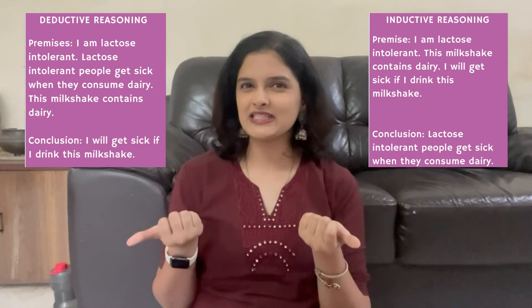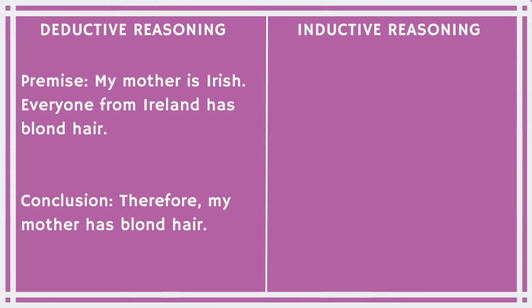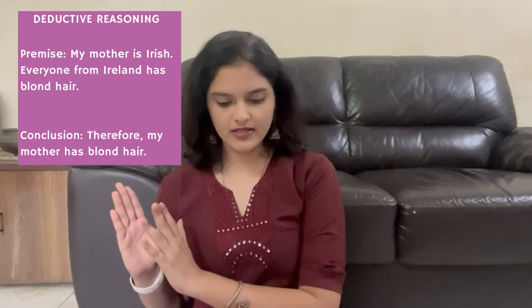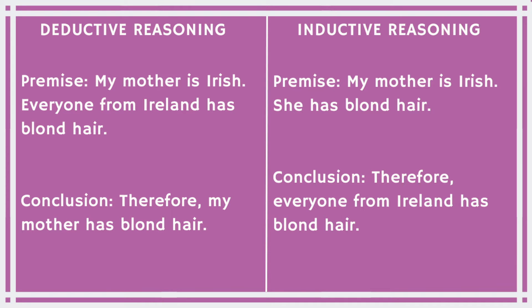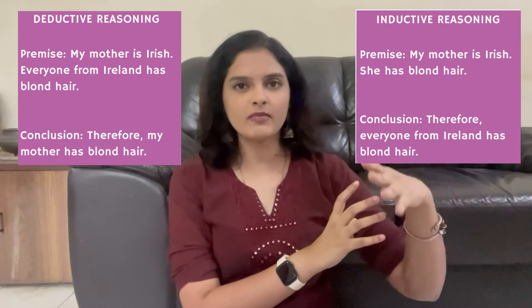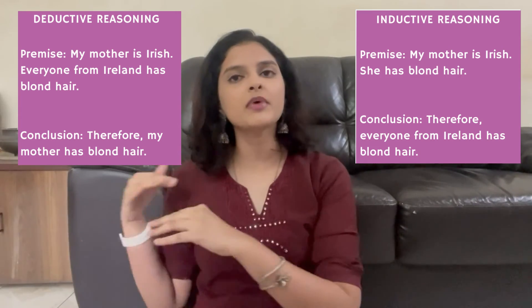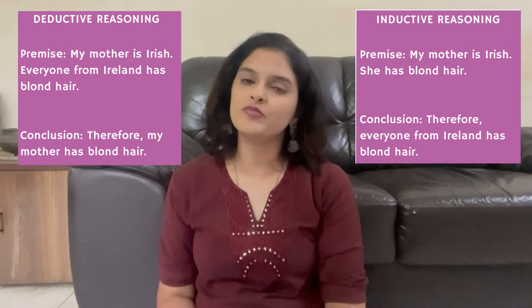Another example. Deductive reasoning: 'My mother is Irish; everyone from Ireland has blonde hair; therefore my mother has blonde hair.' The general rule is applied to derive a specific conclusion. Inductive reasoning for the same: 'My mother is Irish; she has blonde hair; therefore everyone from Ireland has blonde hair.' You take something very specific — your mother being Irish with blonde hair — and generalize it to everybody from Ireland.